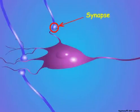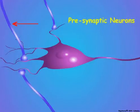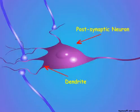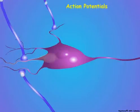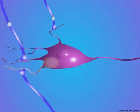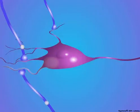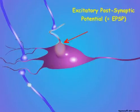Synapses serve two functions: they transmit information between neurons and they interpret the information. Information is conveyed as a frequency of action potentials in the presynaptic neurons through the synapse to the dendrite of a postsynaptic neuron. Each incoming action potential causes a burst of neurotransmitter release at the synapse. The neurotransmitter interacts with the postsynaptic neuron to produce a proportional electrical depolarization, known as an excitatory postsynaptic potential or EPSP.